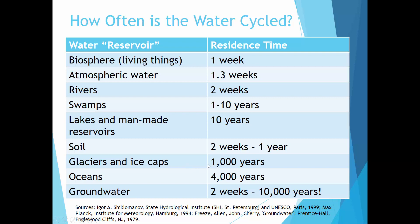Now we head into really long residence times. The last three natural reservoirs hold onto water for really long periods. Glaciers and ice caps on average hold onto water for about a thousand years. This may be changing as global climate change causes many glaciers and ice caps to melt. When water falls on top of a glacier and moves down, it takes a long time to travel through the glacier before it melts and drains into other places.